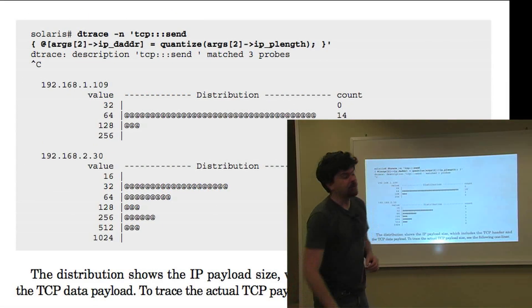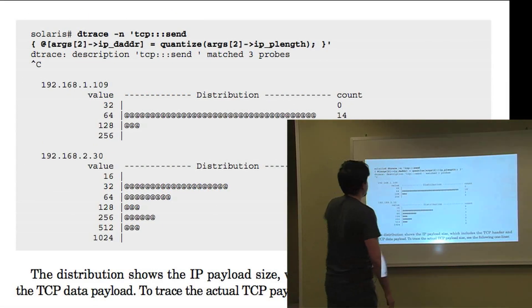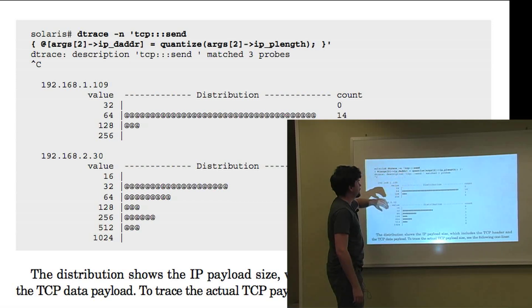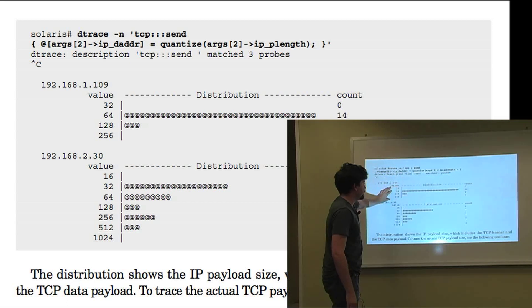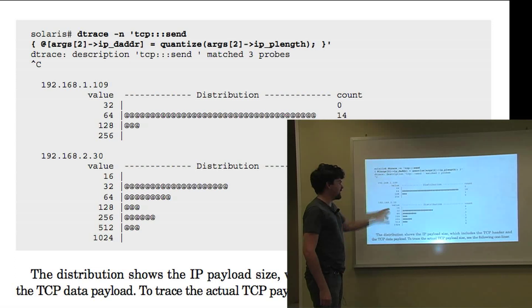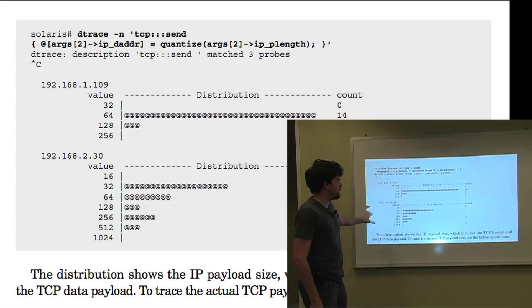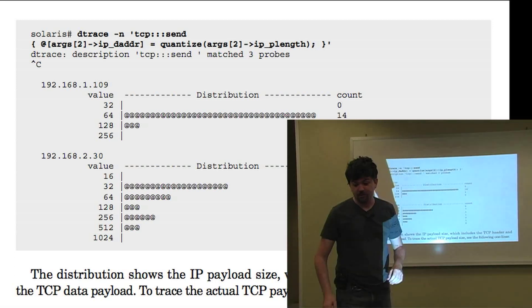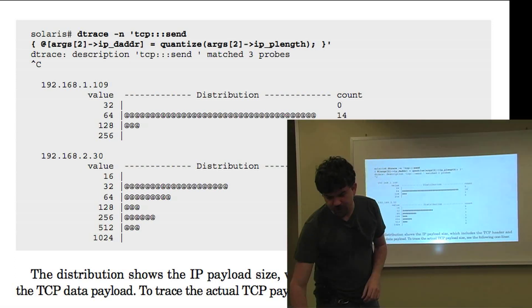This one was TCP send, so it's actually doing the send packets and doing distribution plots of the size of the packet. I've actually used this a fair bit to figure out which clients are doing jumbo frames and which are not.